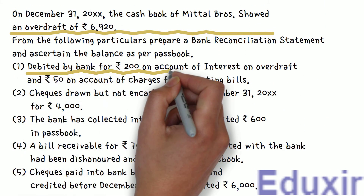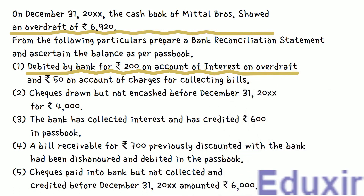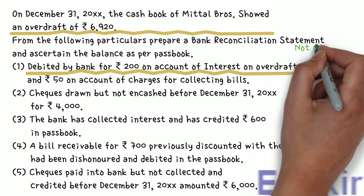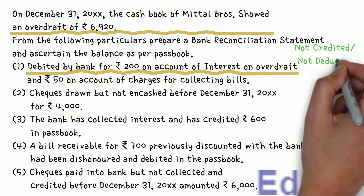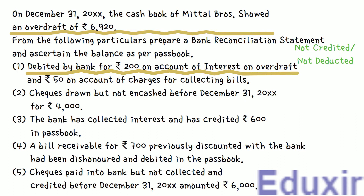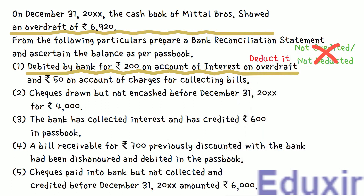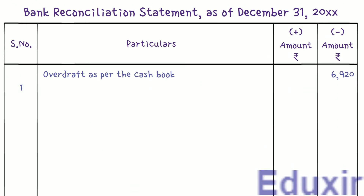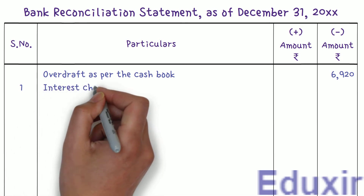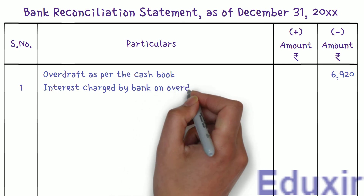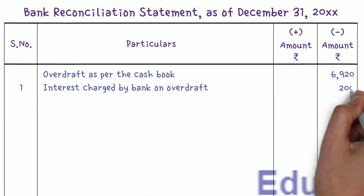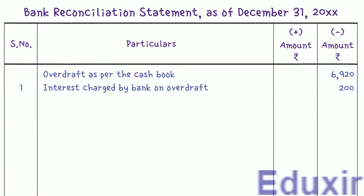It is given that 200 rupees of interest on overdraft is debited by the bank. The business does not know about this until the bank statement is received, so it will not be credited in the business cashbook. We need to deduct this amount from the business cashbook balance to get the bank passbook balance. We write the particulars as 'interest charged by bank on overdraft' and enter 200 rupees in the minus amount column.